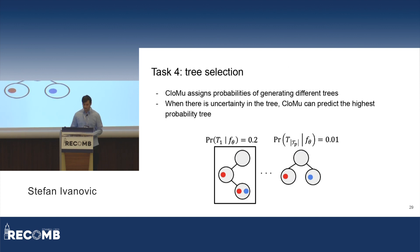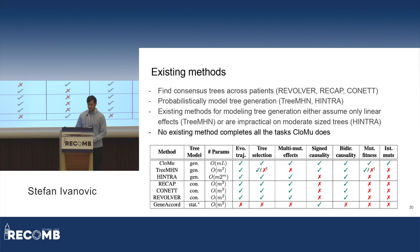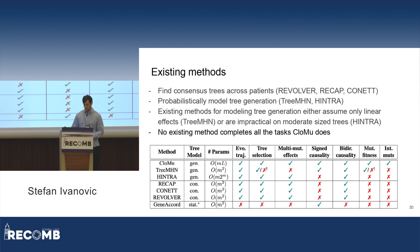Finally, we have tree selection, where CLOMU assigns probabilities to generating trees. Therefore, given tree uncertainty, we can see for a given patient which trees are the highest probability according to the model, and those are more likely to be the correct tree. The existing methods do not complete all of the tasks CLOMU does. CLOMU has a very wide variety of new tasks being completed.